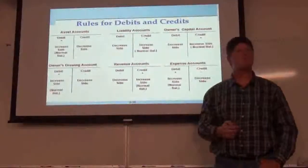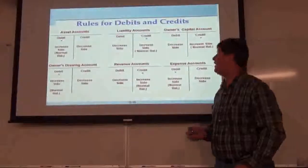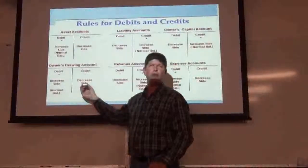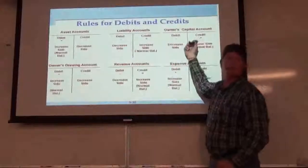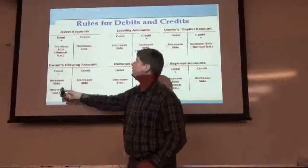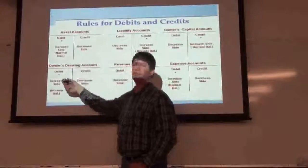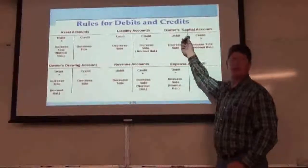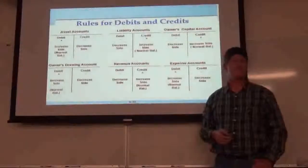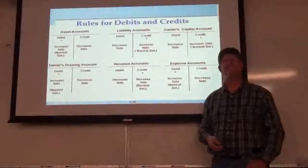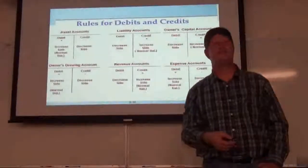Student question: would you ever have an entry on the credit side of the owner's draw account? If the owner puts money in, you credit owner's capital. If the owner takes money out, you debit owner's draw. The only time you'd post a credit to owner's draw is when you close it out and take the balance to zero — and we'll get to that in Chapter 6. This test covers Chapters 1, 2, and 3; the next one covers 4, 5, and 6.